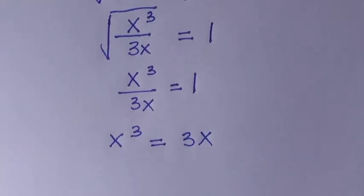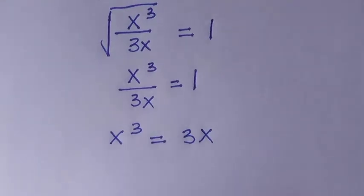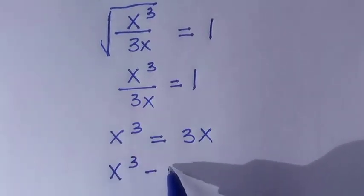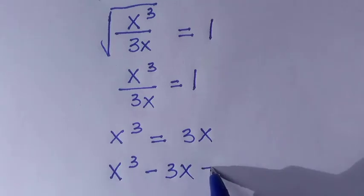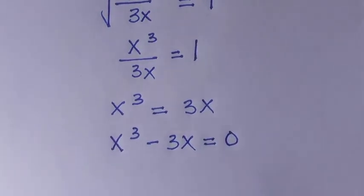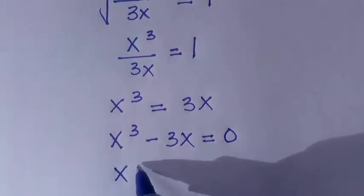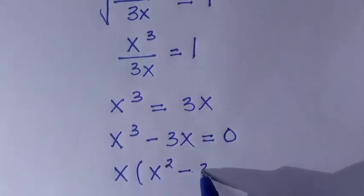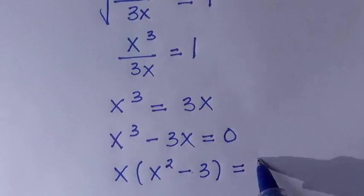Let's take 3x to the left hand side, where we have x to the power of 3 minus 3x equals 0. And by factoring out x here, we have x times x raised to power 2 minus 3 equals 0.